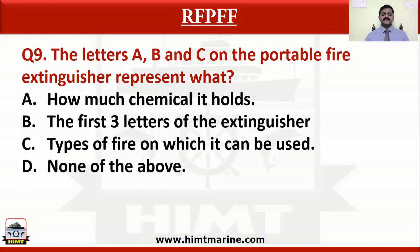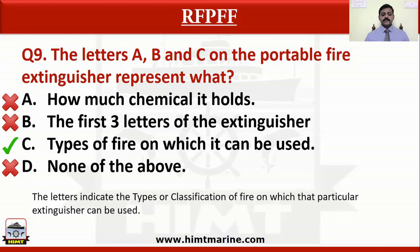The letters A, B, and C on a portable fire extinguisher represent what? Option A how much chemical it holds, option B the first three letters of the extinguisher, option C types of fire on which it can be used, option D none of the above. The correct answer is types of fire on which it can be used — the letters indicate the classification of fire on which that particular extinguisher can be used.